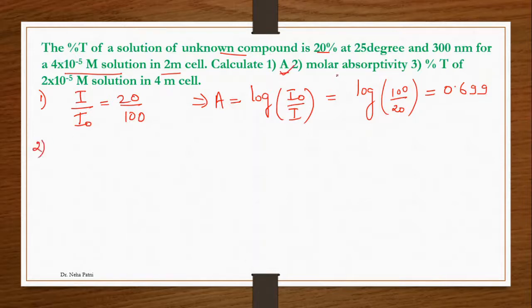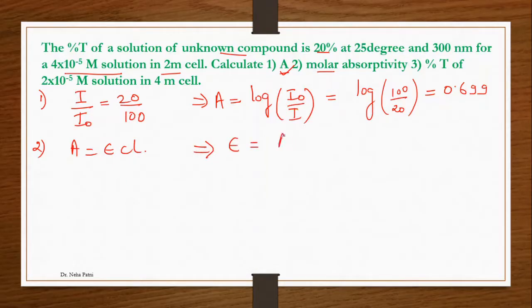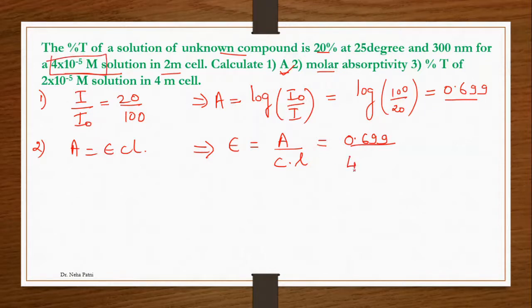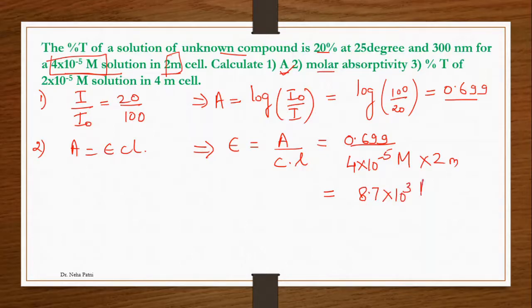They also ask you to calculate the molar absorptivity ε. Using ε = A/(C·L): substitute A = 0.699, concentration C = 4 × 10⁻⁵ molar, and path length L = 2 metres. When you solve this you get ε = 8.7 × 10³ M⁻¹ m⁻¹. So that is how you calculate epsilon from the absorbance.